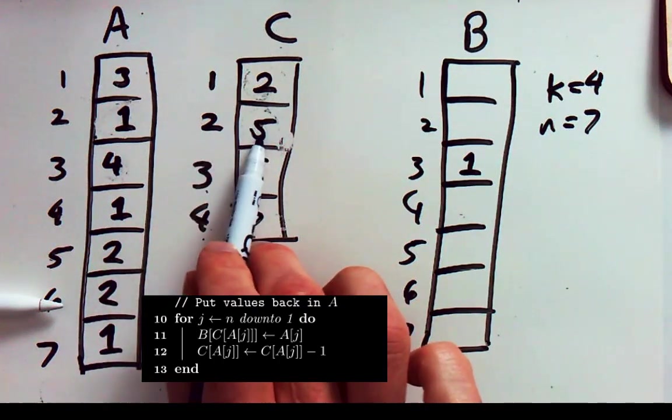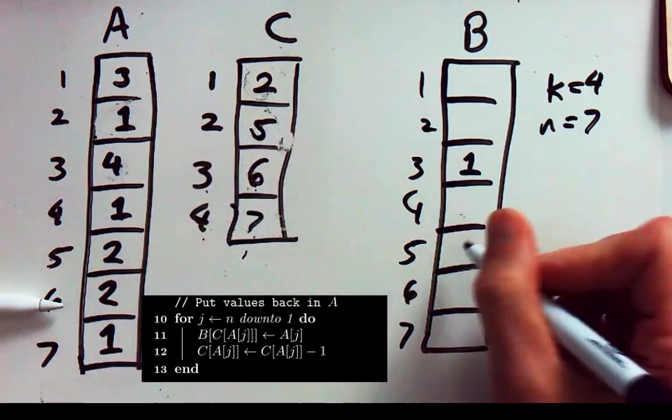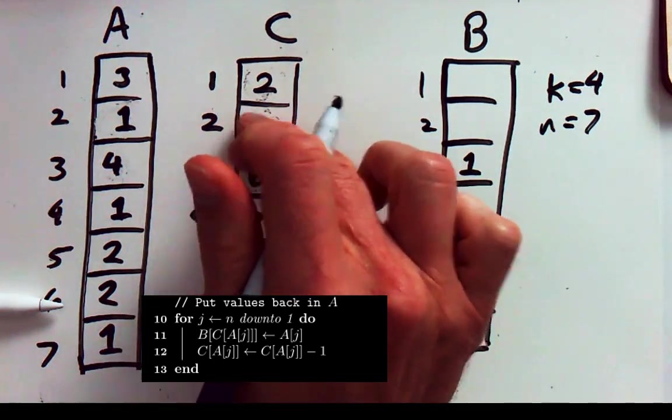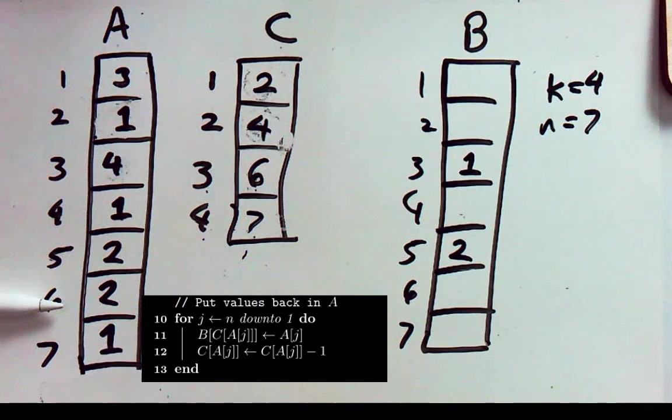Let's look that up. 2 belongs in box 5 out here. So we'll go ahead and copy this 2 over to box 5 and we'll now update this count. So the next time we encounter a 2 it'll go in box 4.